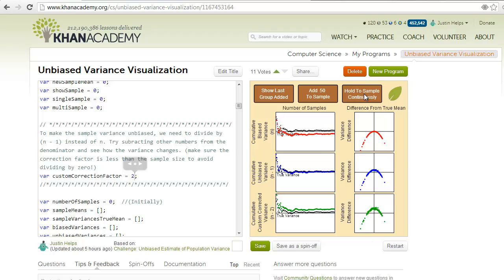And then looking down below at the green, we see that using n-2 ends up over-correcting, and the variance tends to be too high at large sample sizes.